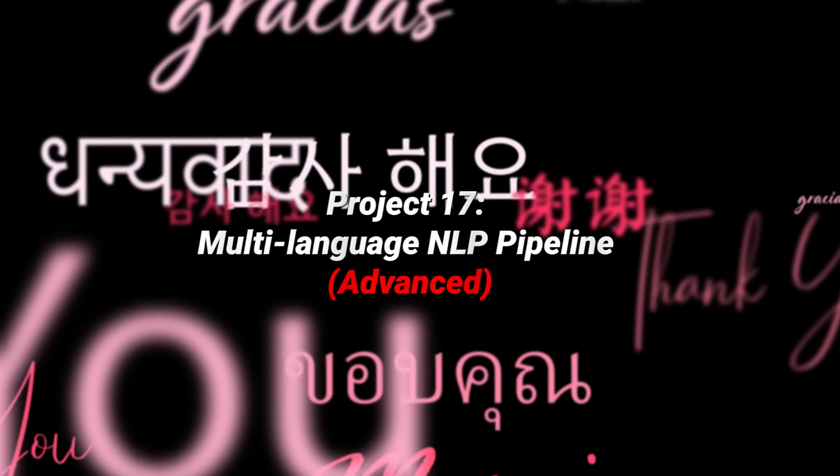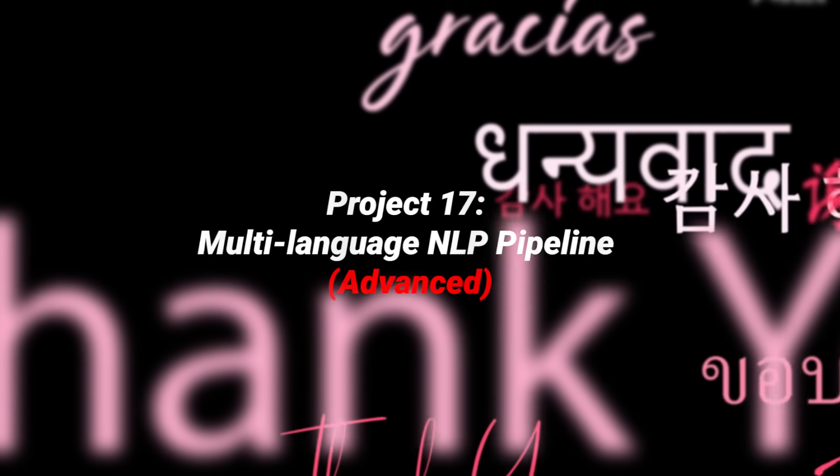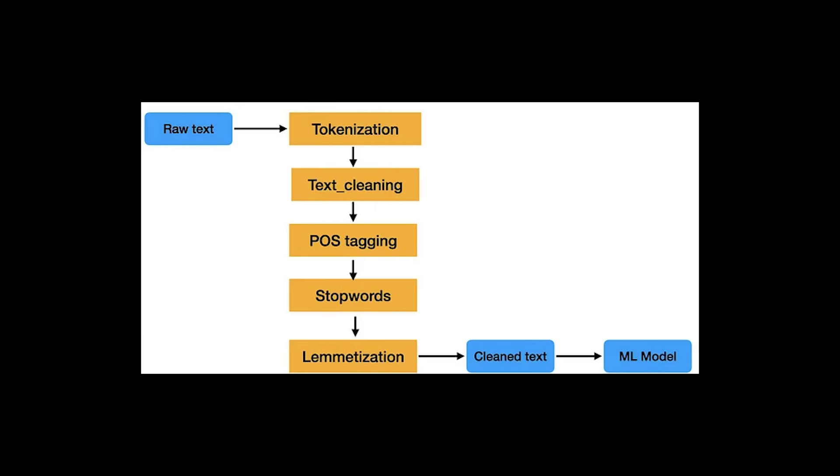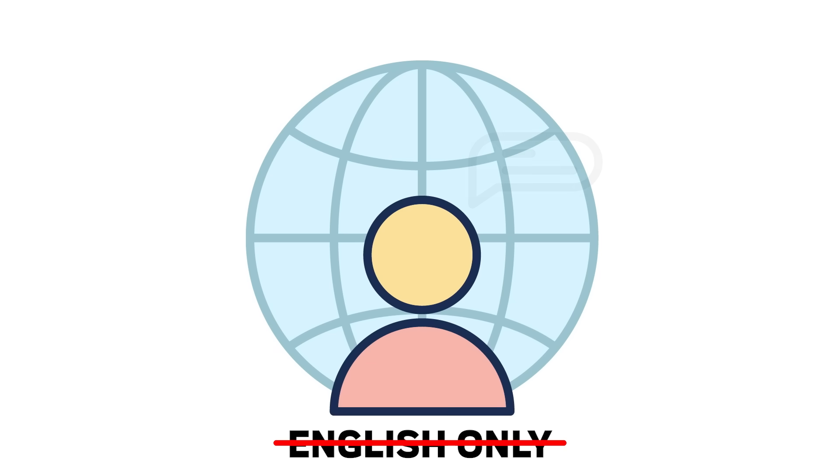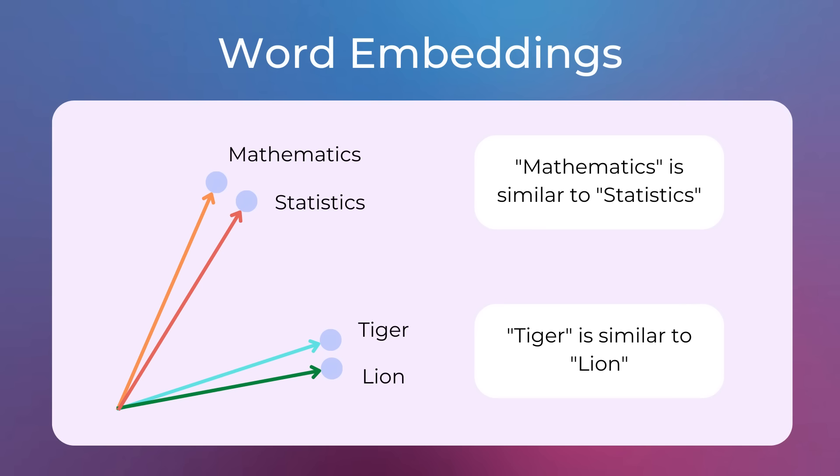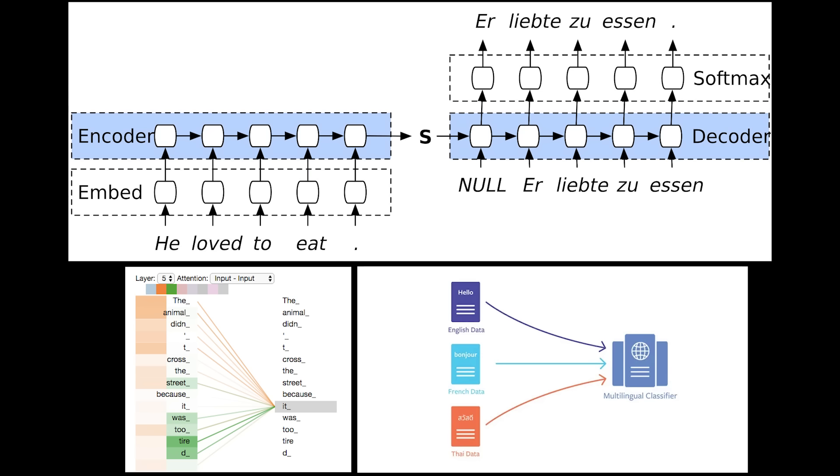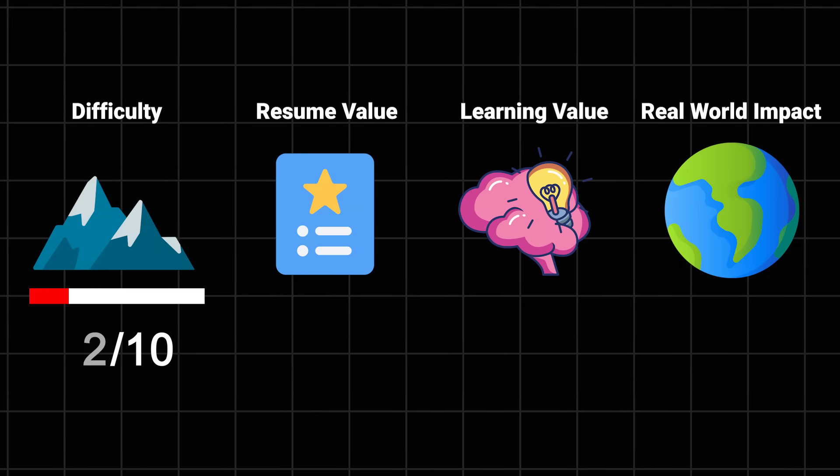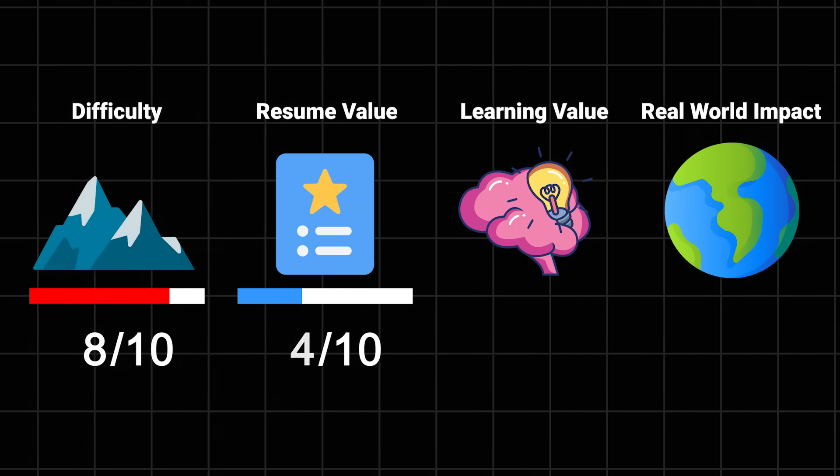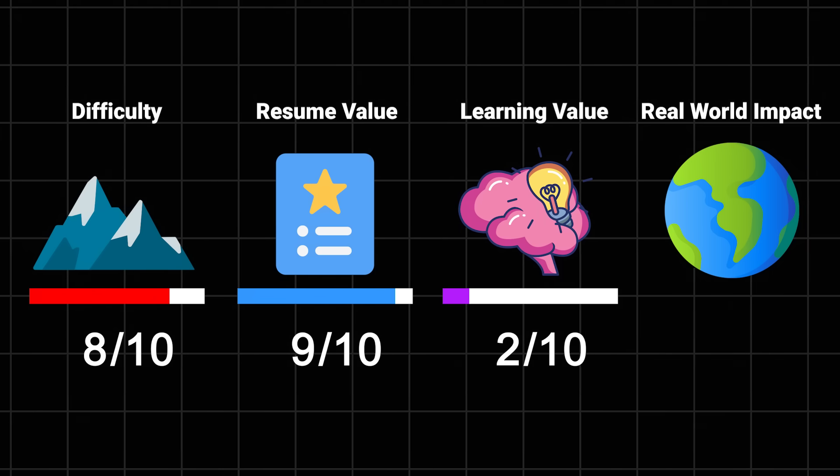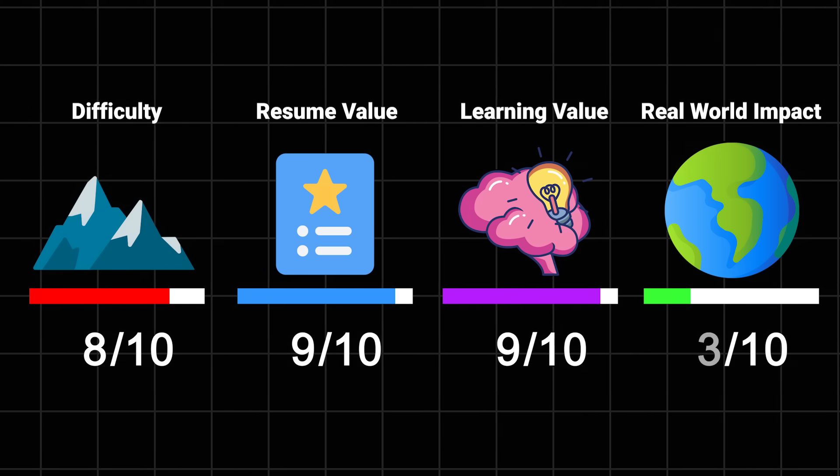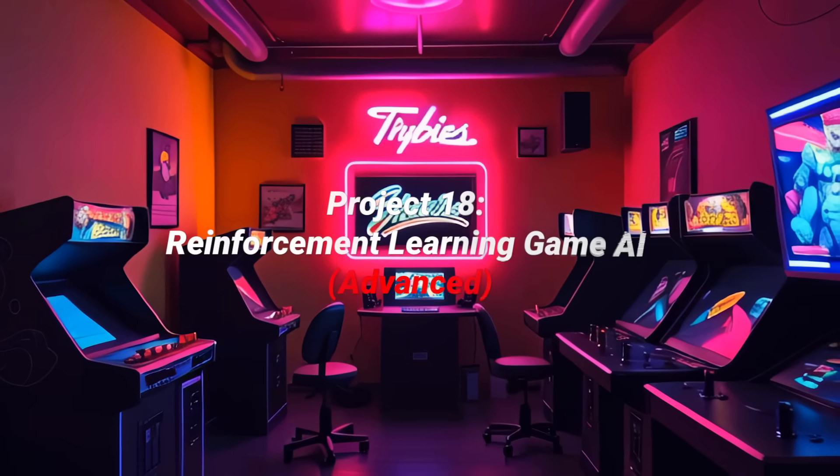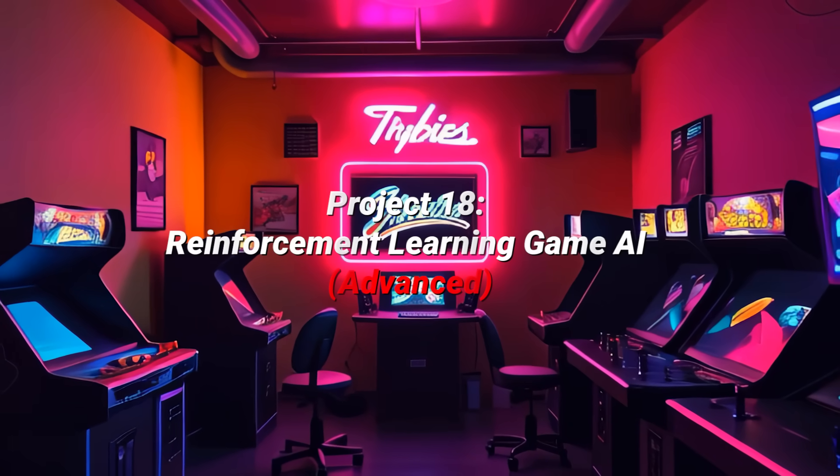Multi-language NLP pipeline. Here's a real-world challenge: build a system that can understand and process text in multiple languages. Because newsflash: not everyone speaks English. You'll learn about multilingual embeddings, translation systems, and why Google Translate sometimes gives you hilarious results. Difficulty: 8 out of 10. Resume value: 9 out of 10, especially for global companies. Learning value: 9 out of 10. Impact: 9 out of 10.